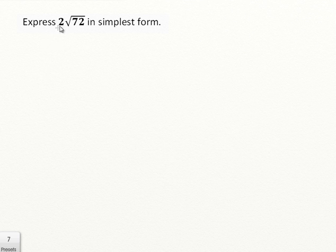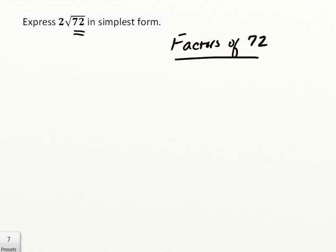So if we were asked to express 2 root 72 in simplest form, well we'll notice here that we're starting with a mixed radical. So we're starting with a mixed radical, we are going to finish with a mixed radical as well. But this root 72, hopefully we'll be able to simplify that down into a smaller value. So we'll go ahead and we'll follow the exact same pattern. We're going to look for the factors of 72, just the value inside the radical sign, and then we're going to look for those perfect squares.